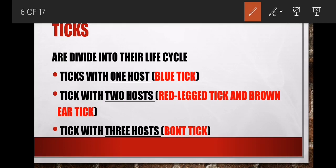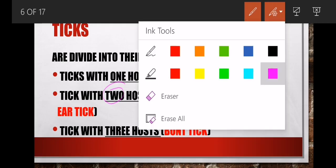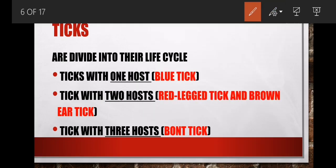If there are two hosts, say it's a two-host life cycle. Same applies when there are three. You must also know the examples: one-host life cycle is the blue tick, two-host life cycle is the red legged or brown ear tick, and three-host life cycle is the bond tick.